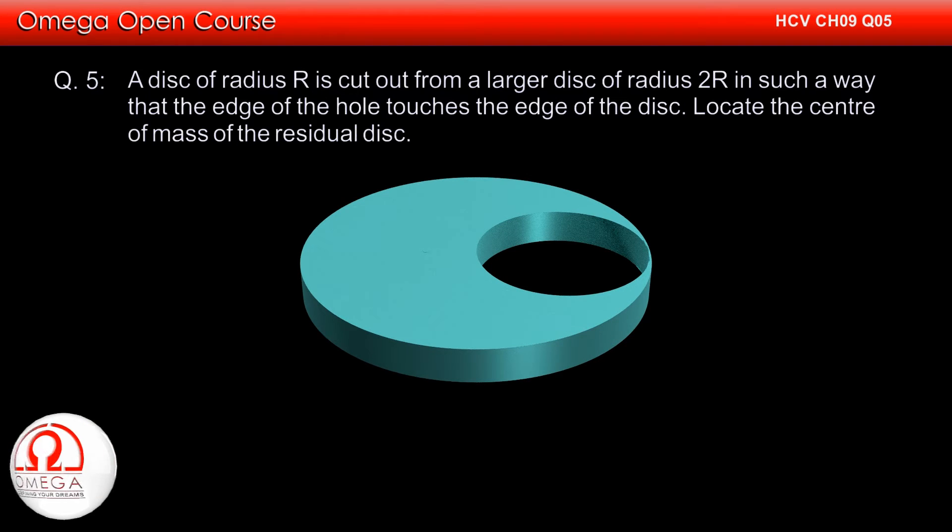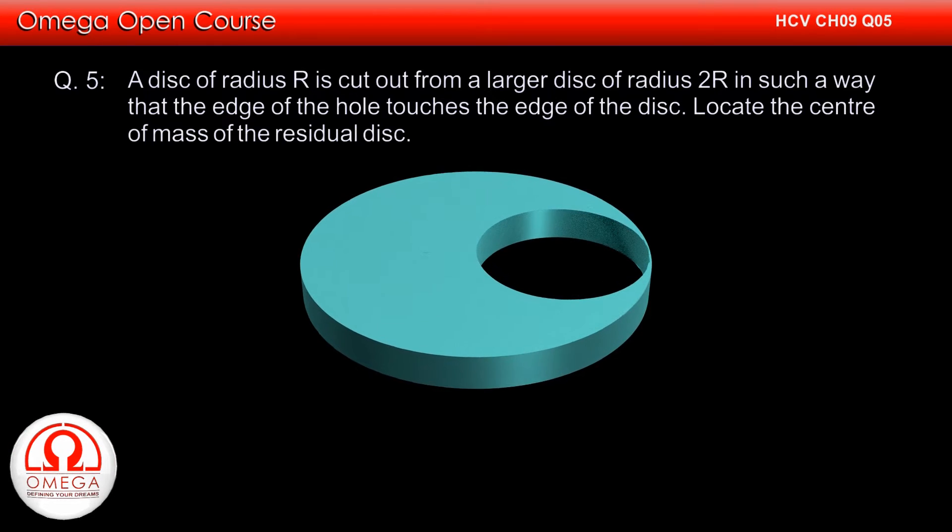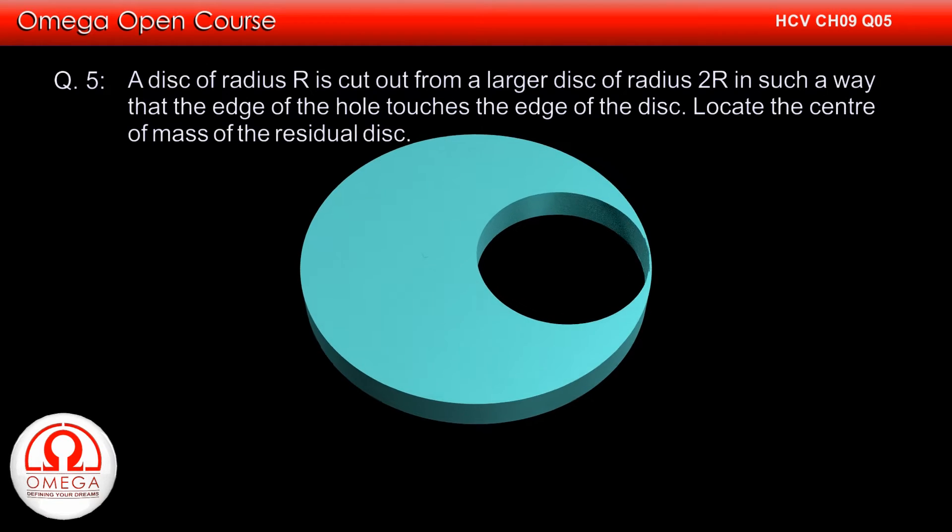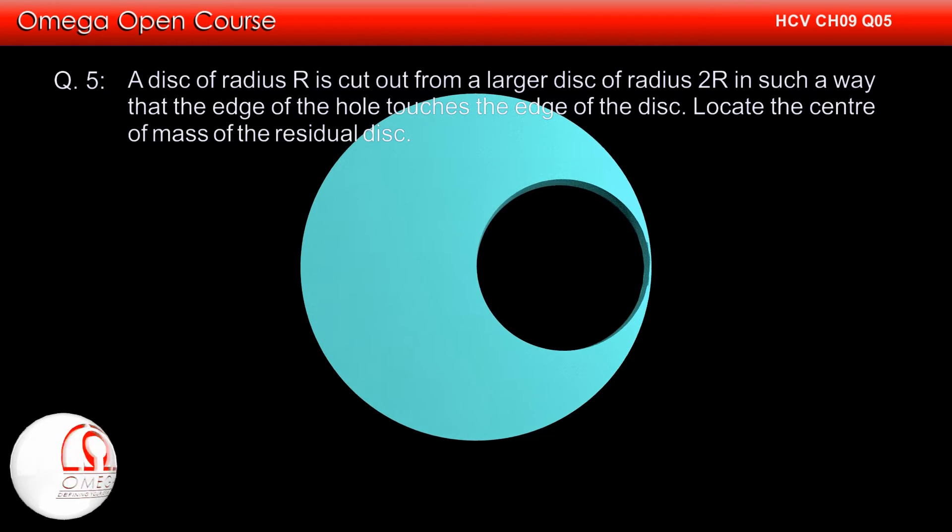A disk of radius R is cut out from a larger disk of radius 2R in such a way that the edge of the hole touches the edge of the disk. Locate the center of mass of the residual disk.